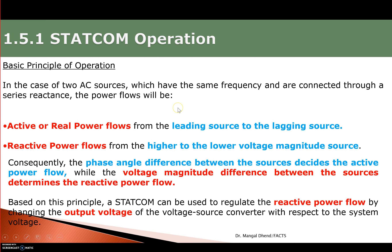There are two modes of operation for STATCOM. STATCOM will supply real power when there is a leading source voltage relative to a lagging source. When there is a phase difference between the two voltages, it can supply or absorb real power. Active or real power always flows from the leading source to the lagging source. Whether the voltage source converter phase angle is leading or lagging with respect to the system voltage determines the direction of real power flow.